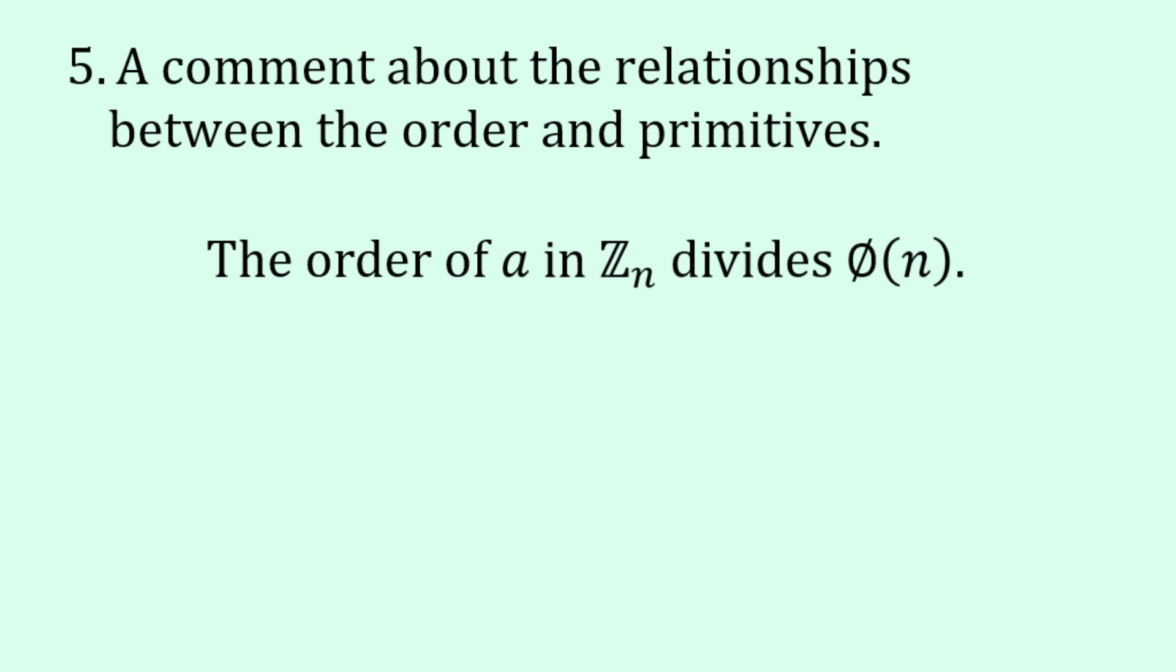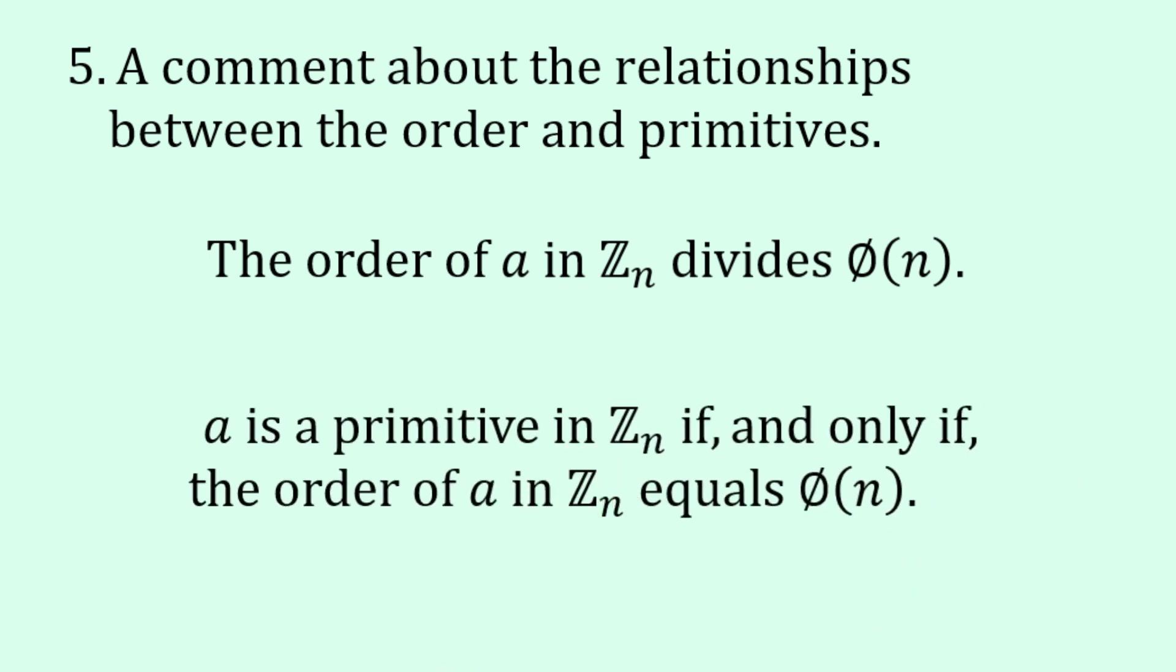The second rule, which is a little bit more subtle, is that A is a primitive in Zn if and only if the order of A in Zn equals phi of n.